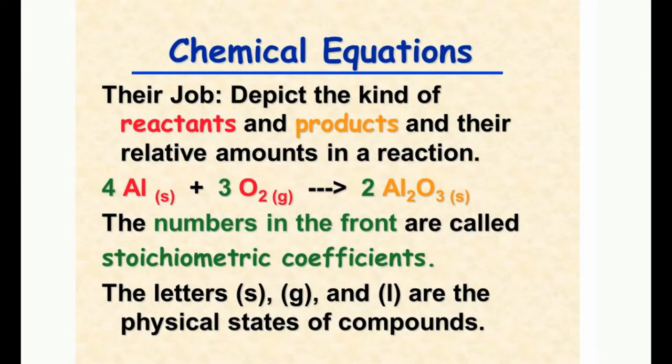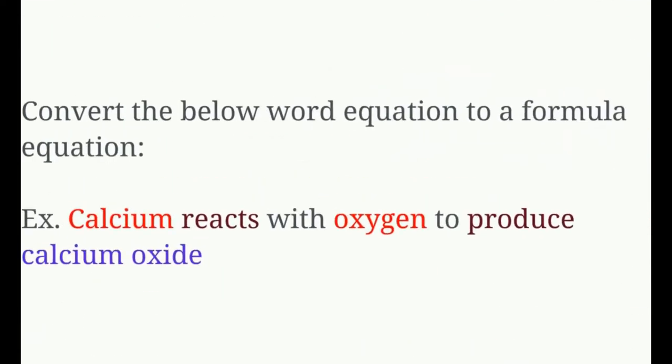If you did not have those coefficients, the equation would be unbalanced, and that violates the law of conservation of matter. It has to have the same number of atoms you started with as you end with. Sometimes it comes out perfectly even — like the zinc and iodine example — but that only happens about 10% of the time. Most of the time you're going to have to do this balancing.